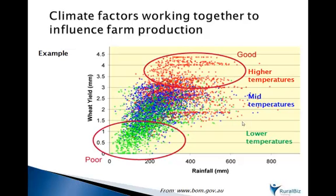Now, we know that climate factors don't operate in isolation. For example, you may have a lovely crop experiencing a good season and still get hit by a frost at a critical point. Here's an example of a study done by looking at the combined effect of rainfall and temperature on wheat yield. We can see that as rainfall increases so does wheat yield, as we would expect. We can also see that the green dots representing lower temperature growing seasons are clustered in the lower yield end of the graph, versus the red dots representing a higher temperature growing season. This is a good example of rainfall and temperature operating together to influence wheat yield.